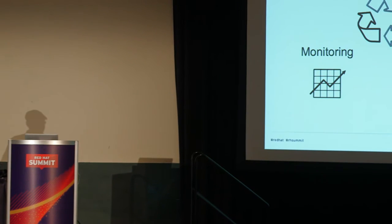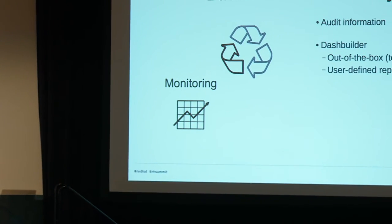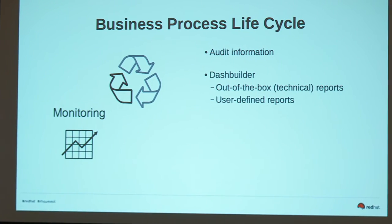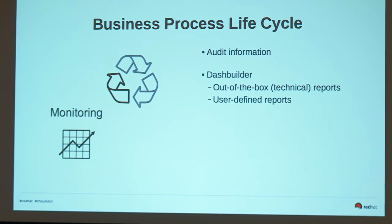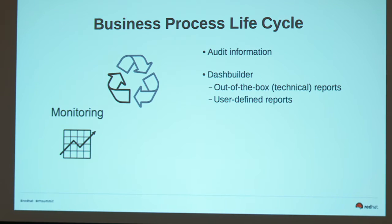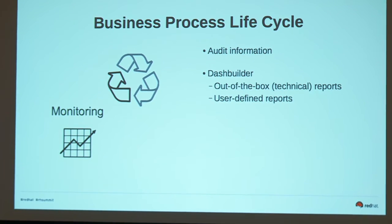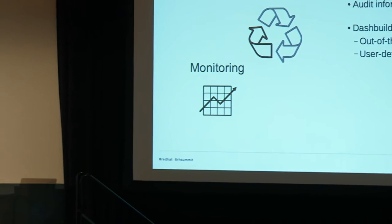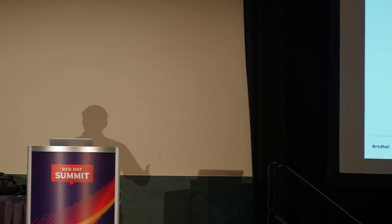In terms of monitoring, we have planned a lot around all this information. When you explore the business process running, you have all the history and information available on the web UI. All this information is also available through APIs. We also have Dash Builder, which provides technical reports out of the box where you can see how many process instances are running, what type of instance, everything that is running or has run. We also provide the ability for users to define their own reports in Dash Builder.